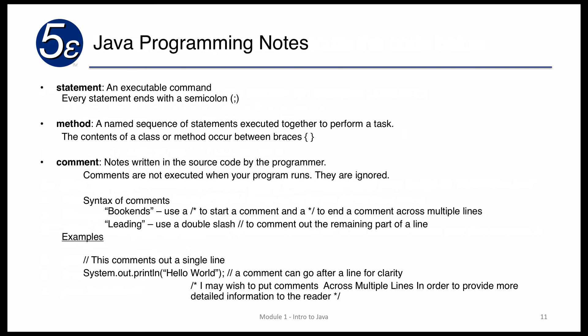Comments are notes written in the source code by the programmer. Comments are not executed when your program runs — they are ignored. There are two types of comments: bookend comments, which start with a slash-star and end with a star-slash spanning multiple lines; and leading comments, which use a double slash at the beginning of a line to comment out the rest of that line. You'll see examples of both single-line and multi-line comments below.